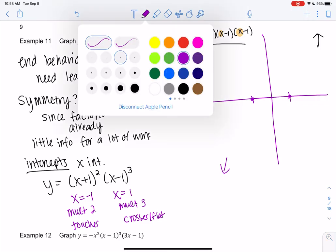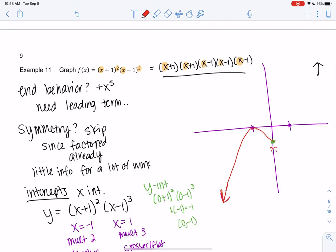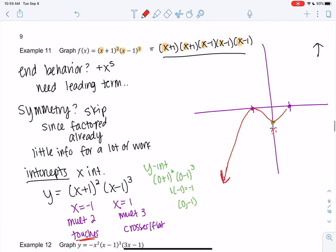And then x equals 1 is multiplicity 3, which means it crosses and is flat. It'll cross it, but it'll be flat for a little. And then the last one is the y-intercept. We just plug in 0, which we get 1 times negative 1, so we get negative 1. So 0, negative 1, which would be this direction. So that helps me find the turning point a little bit. We know we have to start at the bottom because of the arrow. And we know we're going to go to negative 1. And we're only going to touch. So we're not going to cross. We're going to touch. And then we're guessing that we'll probably turn around right there. We may turn around sooner. We don't know. And then we're going to go up. And then what happens at 1? We're going to cross, but we're going to be flat for a little from the third power. And then we just go up.